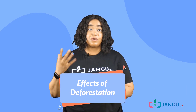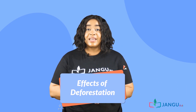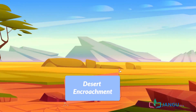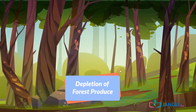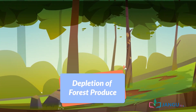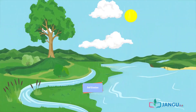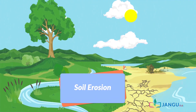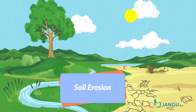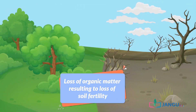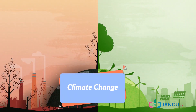The loss of trees and other vegetation can lead to desert encroachment, depletion of forest produce which serves as raw materials for industries such as timber and paper industries, soil erosion as there is no vegetation cover on the soil, and loss of organic matter resulting in loss of soil fertility.